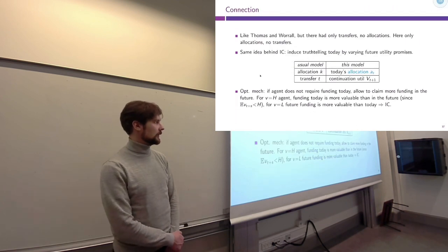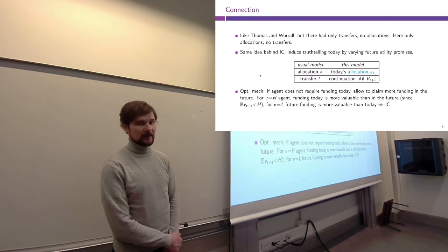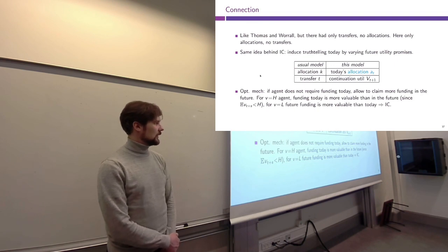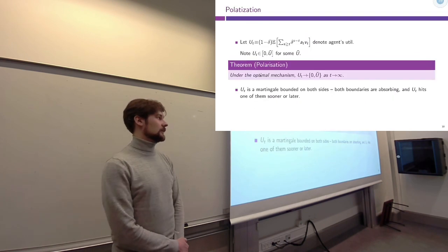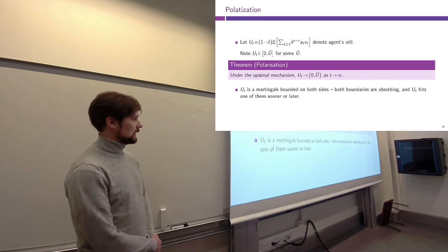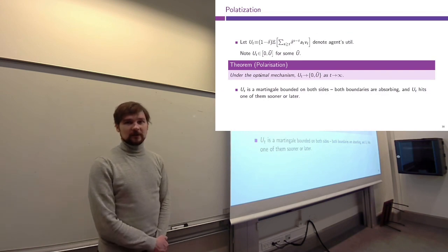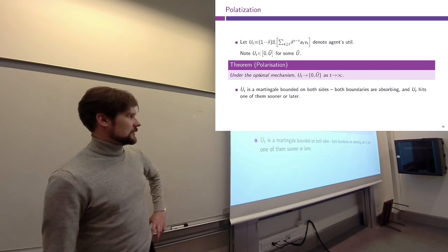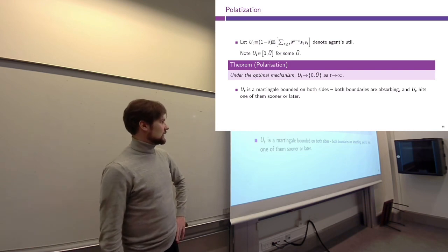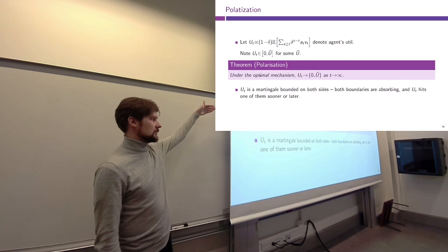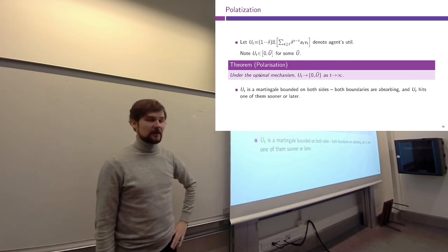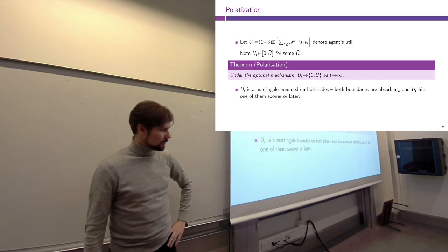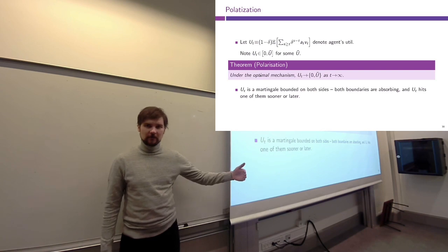There is a slide going into slightly more detail on how this relates to models considered earlier, but I'll skip it and move straight to the result. I told you the result would be quite similar to the immiseration result of Thomas and Worrell. In this case the result is polarization: Uₜ, the agent's expected continuation value from participating in the mechanism, converges to one of the two possible boundaries.